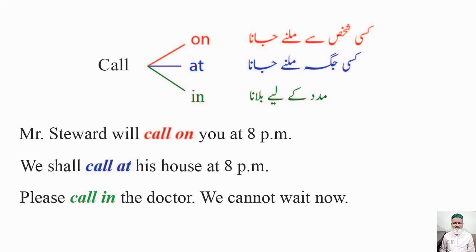Call ان verbs میں سے ہے جن کے ساتھ مختلف prepositions لگنے سے meanings بدل جاتے ہیں۔ سب سے زیادہ کام آنے والے ہیں: call on, call at, اور call in۔ Call on کا مطلب کسی شخص سے ملنے جانا — Mr. Stewart will call on you at 8 p.m. Call at کا مطلب کسی جگہ ملنے جانا — We shall call at his house at 8 p.m. Call in کا مطلب مدد کے لیے بلانا — Please call in the doctor, we cannot wait now.